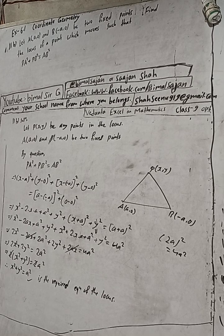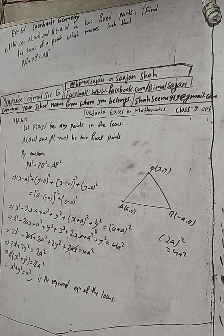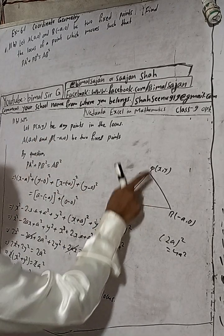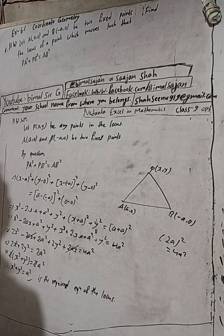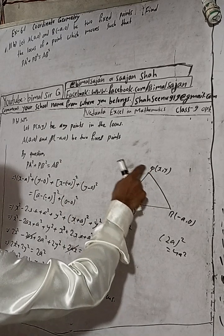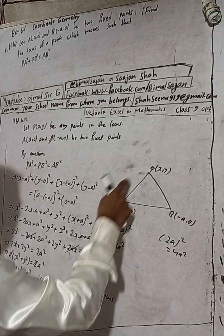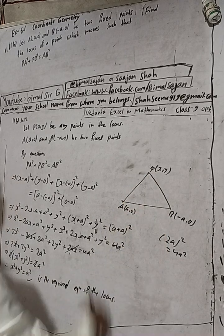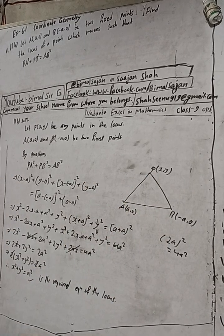Now a quick recap in Nepali: this question says let A(a, 0) and B(-a, 0) be two fixed points. A and B are the fixed points, and P is a moving point. Find the locus of point P which moves such that PA² + PB² = AB².